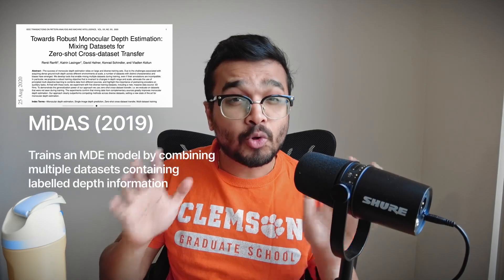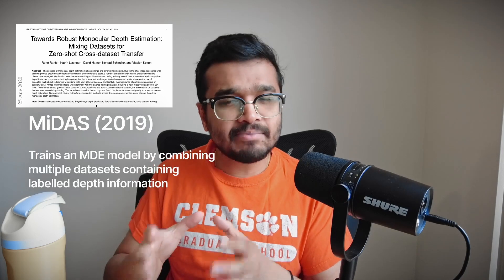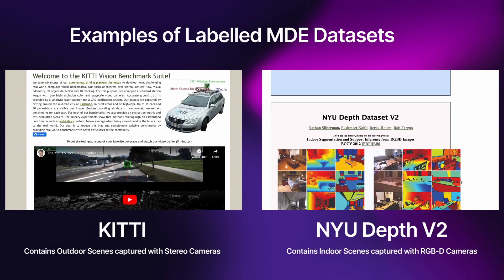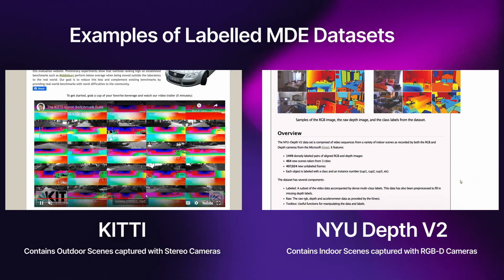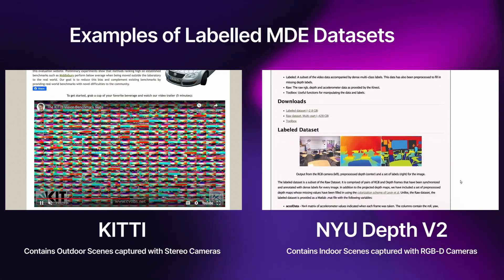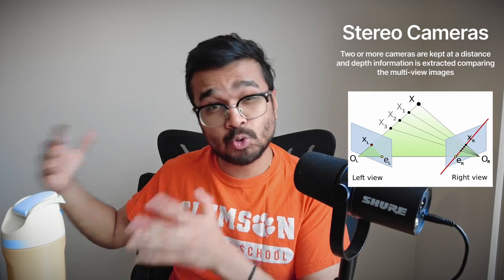To fully understand the Depth Anything algorithm, we first need to revisit the MIDAS paper from 2019. MIDAS trains a neural network for monocular depth estimation using a combination of different datasets containing labeled depth information. For instance, the KITTI dataset for autonomous driving provides outdoor images, while the NYU Depth V2 dataset offers indoor scenes. These datasets are typically collected using stereo cameras placed at a fixed distance to capture the same scene, allowing for depth information extraction as a post-processing step.